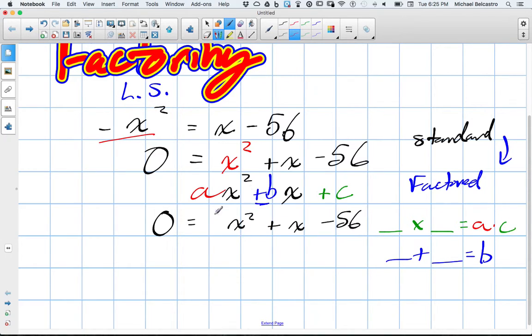So zero is equal to x squared plus x minus 56. What's my a term here? What would the coefficient in front of the x be if there's no number written? Just 1. So our a term is 1. And what's our c term? Negative 56.